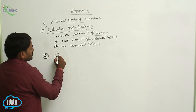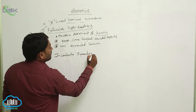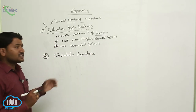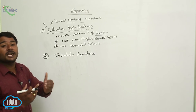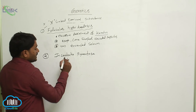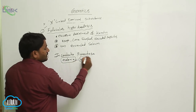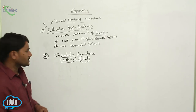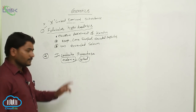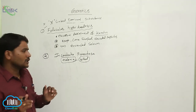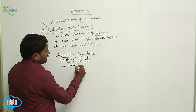The second example is incontinentia pigmentosa, another X-linked dominant character. It involves progressive degeneration of melanin from the skin, leading to loss of pigmentation. It is sometimes lethal. The melanin is lost from the skin, causing depigmentation. It is lethal in homozygous affected females, but not lethal in males.